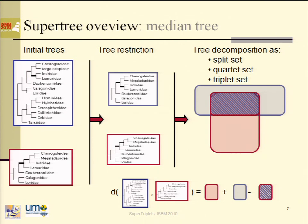So the first step uses the same set of leaves present in these two trees by decomposition — they are either clusters, or quartets, or triplets. And if we have this representation it is defined — and in the red set the number of elements is counted.